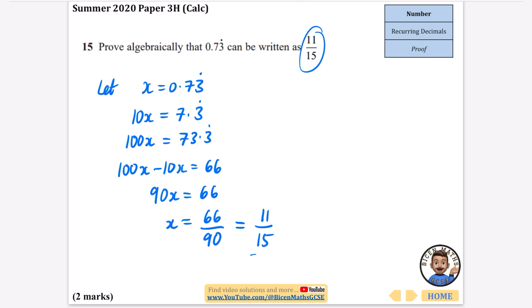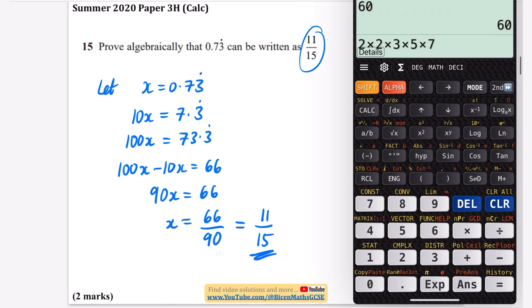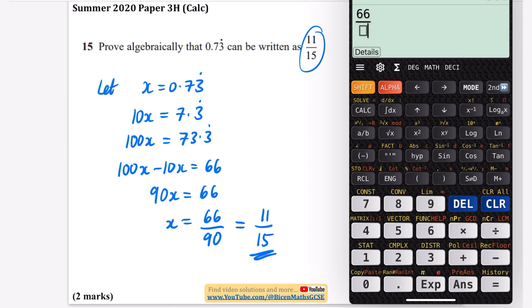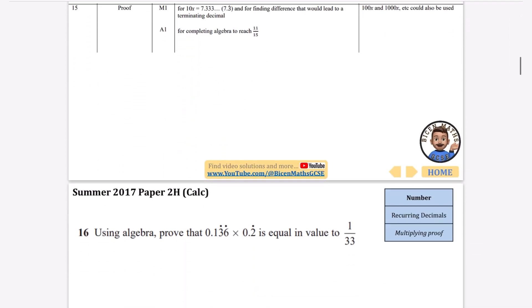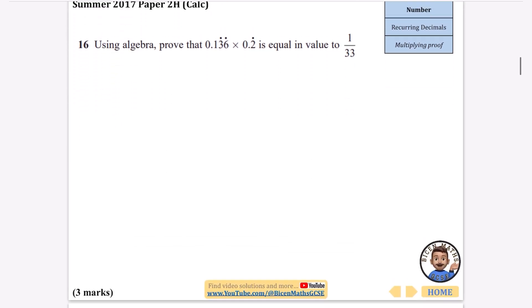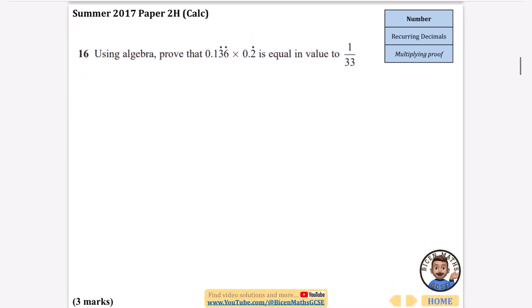So 90x equals 66, so x equals 66 over 90. For it to become 11 over 15, we can see if I divide the top by 6 and divide the bottom by 6, I get 11 over 15, which is what they wanted. Again, that could be done on a calculator. You could have just done 66 over 90 and it straightaway tells you it goes to 11 over 15, and it also gives you the correct decimal expansion. The proof doesn't even really need the mark scheme.